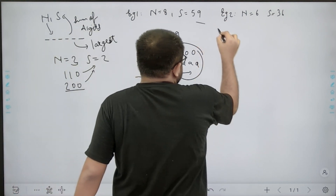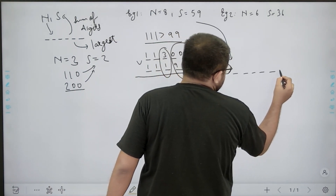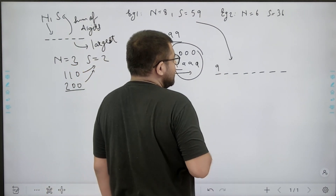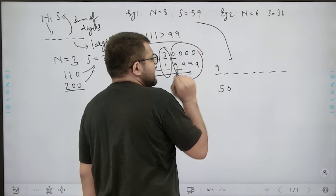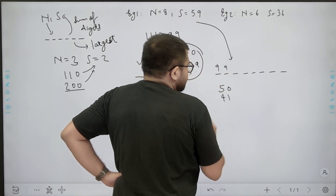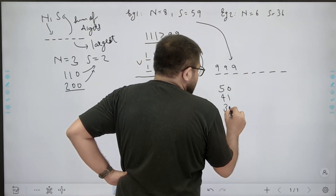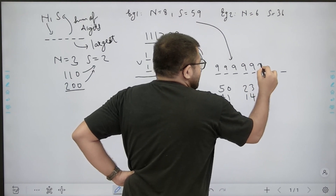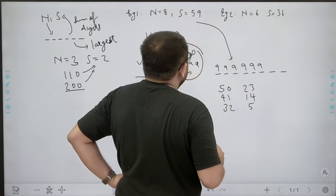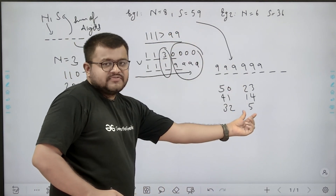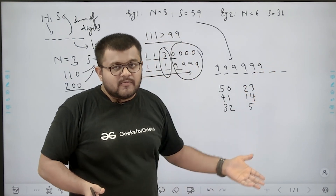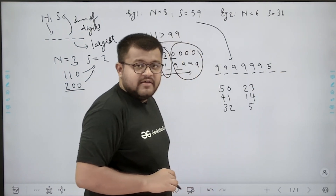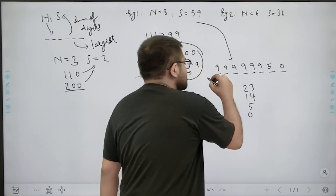For example, if the number of digits is 8 and sum of the digits should be 59, I will start with the largest number possible, so I place 9 — sum left is 50. I place 9 again — sum left is 41. Place 9 again — sum becomes 32. Place 9 again — sum remaining is 23. Place 9 again — sum remaining is 14. Place 9 again — sum remaining is 5. Now I cannot place 9 because the sum of the remaining two digits must be 5, so the largest number possible here is 5. I place 5, sum remaining is 0, so I place 0. This is the largest number I get.